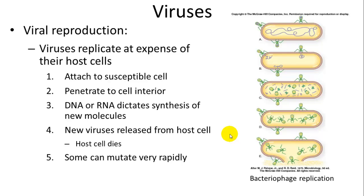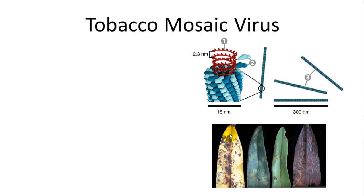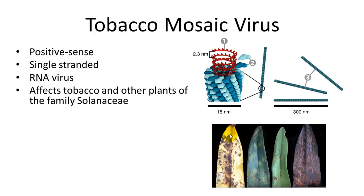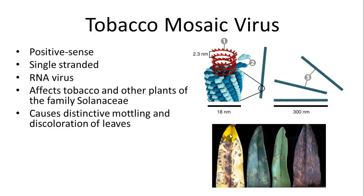Mutation allows viruses to counteract defenses against them, which is why new vaccines constantly need to be developed. A very common example of a plant virus is the tobacco mosaic virus — it is a positive-sense, single-stranded RNA virus. It affects tobacco and other plants of the family Solanaceae, and it causes distinctive mottling and discoloration of the leaves, which you can see here.